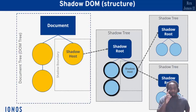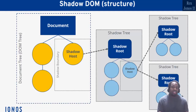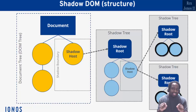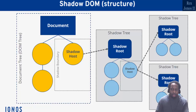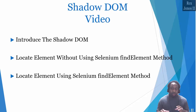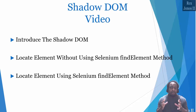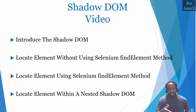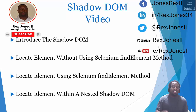From this diagram we see how an element can be in one shadow DOM or within a nested shadow DOM. A nested shadow DOM is when a shadow DOM is located in another shadow DOM, something like the last two boxes. There are different ways to find an element inside a shadow DOM — we can find an element without using Selenium's find element method, and also locate an element when using Selenium's find element method. I'm going to show you both ways and demo how to locate an element within a nested shadow DOM. I will see you in the next session, thank you.